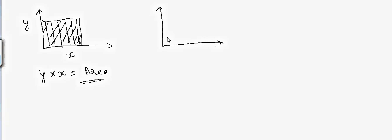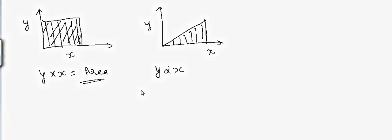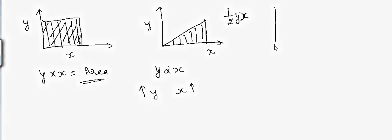Now let's take another example where we have y and x, but instead of a straight line it's more like a diagonal. Here y is proportional to x — as you increase x, y also increases. You might say you know this because it's a triangle, and the area is half times y times x.